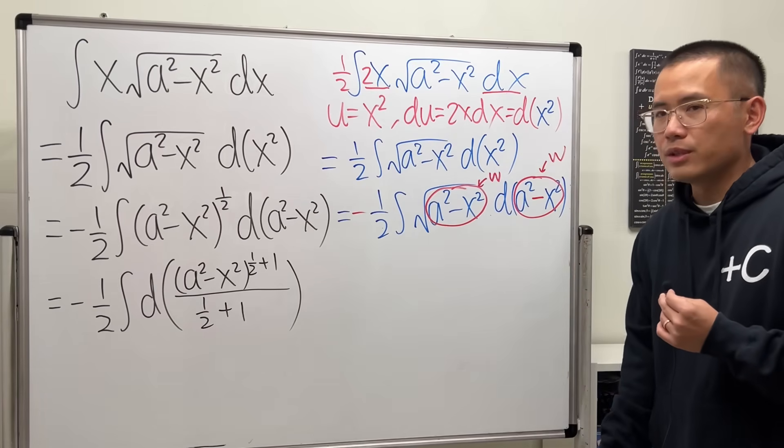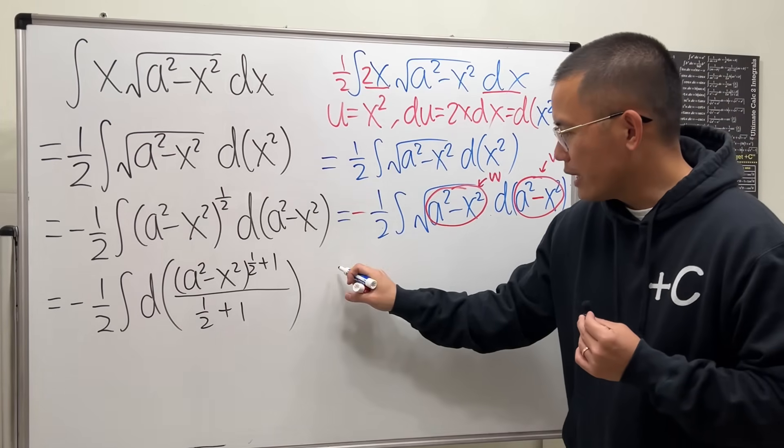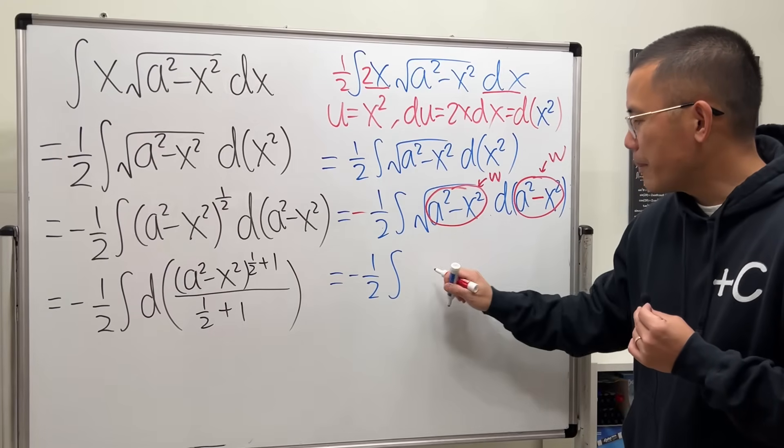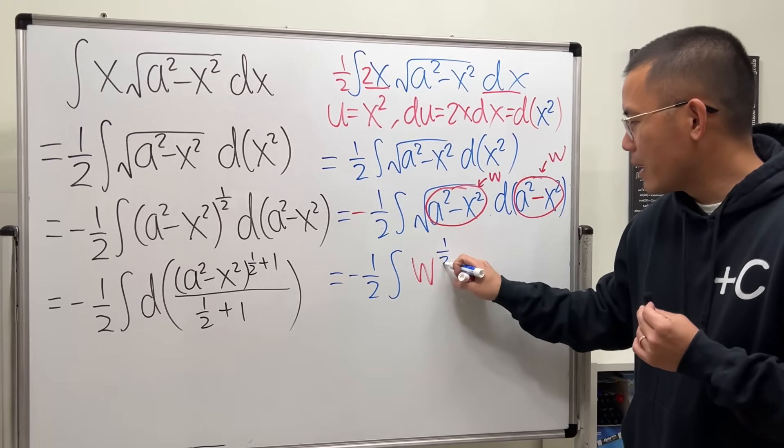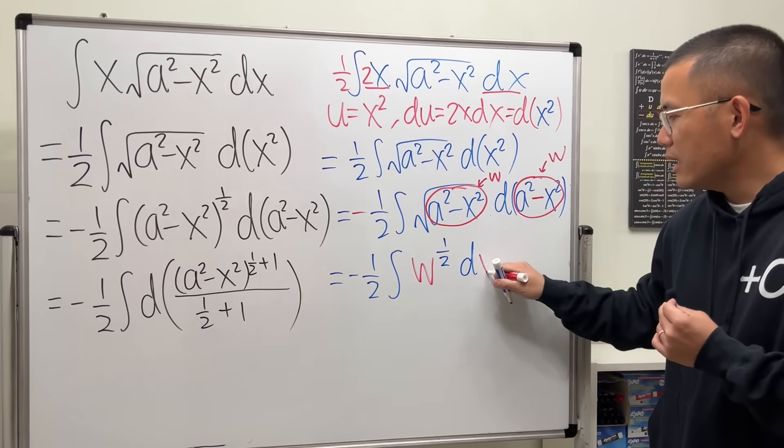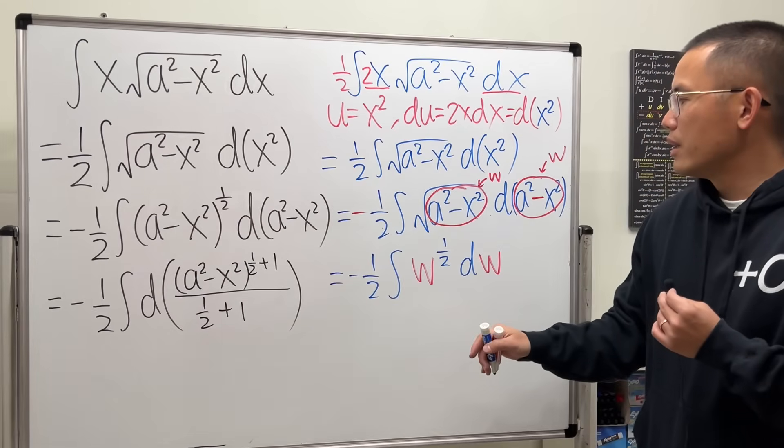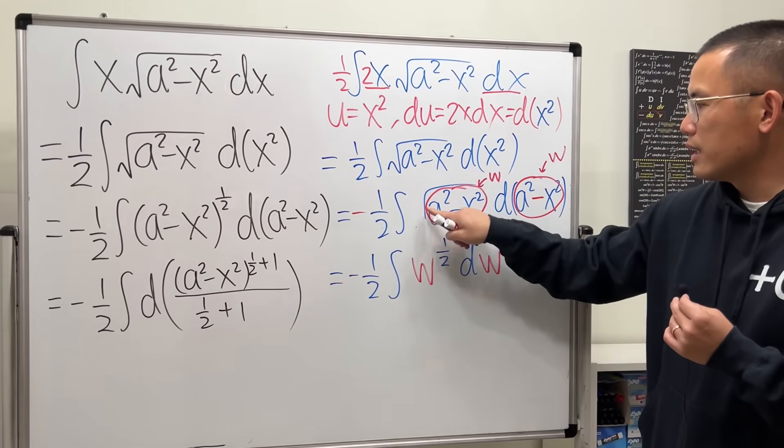That you are doing the w substitution. So if you are doing that, then you will do negative 1 half integral w to the 1 half power and then dw, yeah? It's really what's going on like this step here. And then they wrote the square root as the 1 half power.